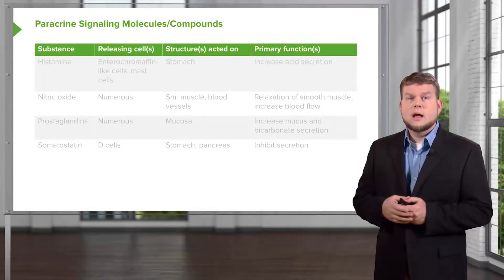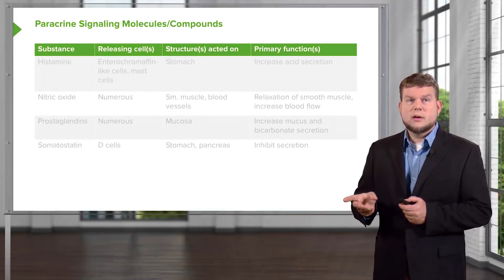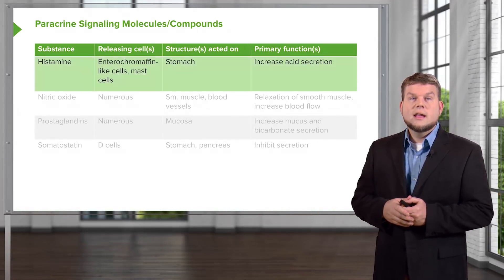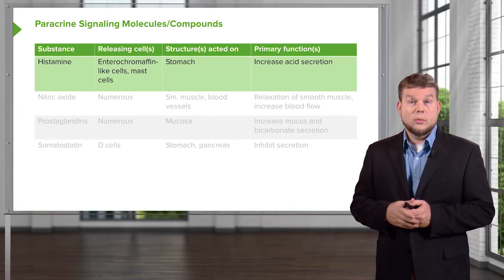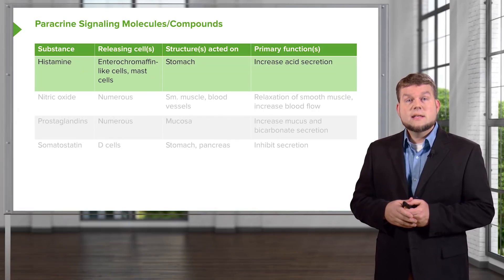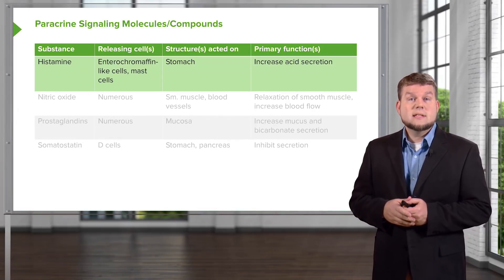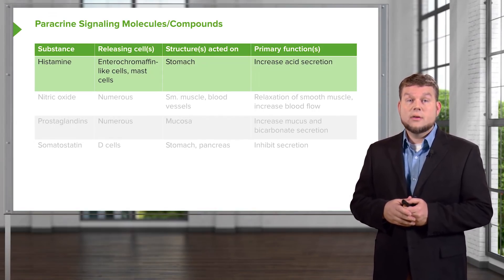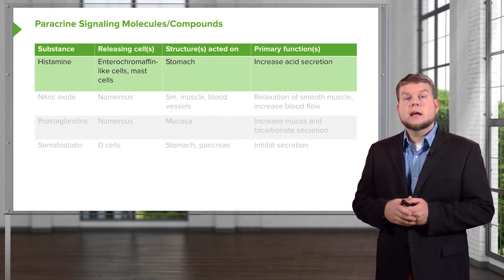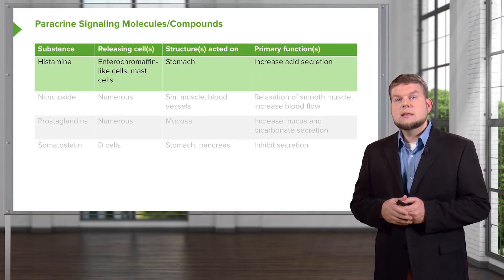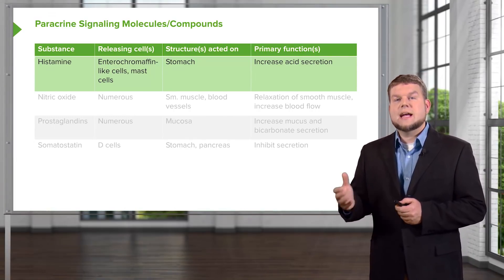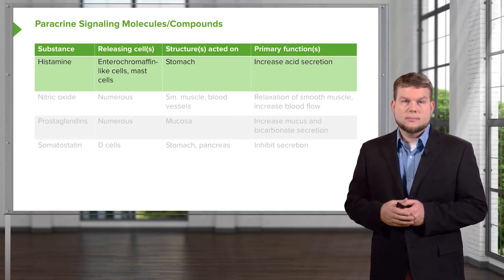Now for the paracrine signaling molecules. Histamine is one of the primary ones — it is released from ECL cells as well as mast cells, and these increase acid secretion.